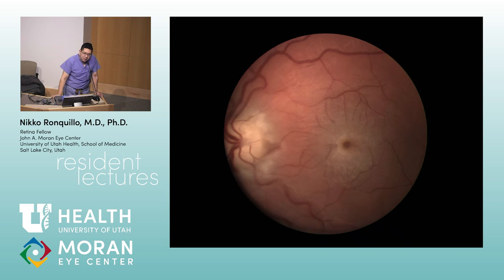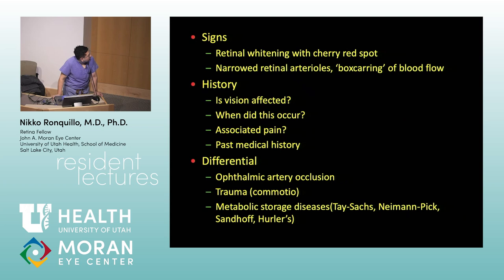For OCAPS, they don't ask a lot about CRAOs, BRAOs, and BRVOs — these are common clinically but less tested. If it's a child with a cherry red spot, think about metabolic storage diseases: Tay-Sachs, Niemann-Pick, Sandhoff, and Hurler's.